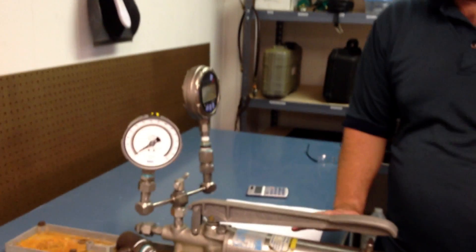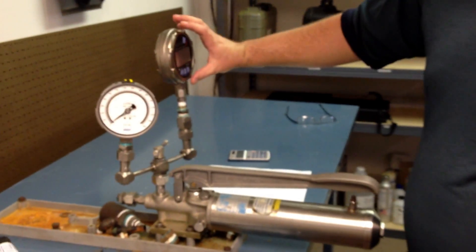Welcome to this old shop. Today we're going to calibrate a test gauge on a gauge comparator, which is basically a pump with a digital gauge, and you compare the two.